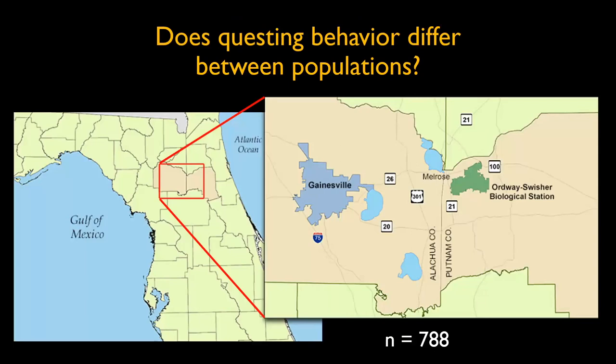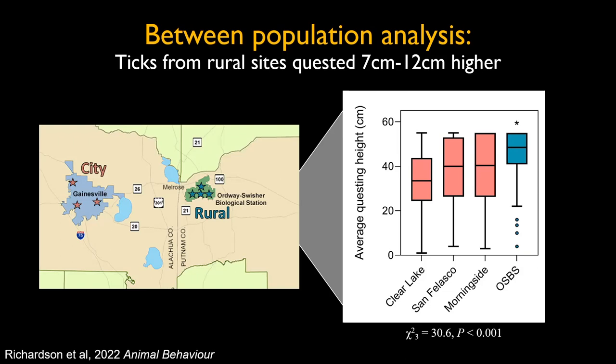She then scaled up to compare populations: she collected ticks from three parks in Gainesville and from Ordway-Swisher, about 40 kilometers away. Ticks from Ordway, the more rural site, quested 7 to 12 centimeters higher than ticks from Gainesville. It could be that there's a different set of host species in rural areas — like deer — requiring ticks to climb higher, whereas Gainesville ticks mostly encounter smaller mammals and pets.